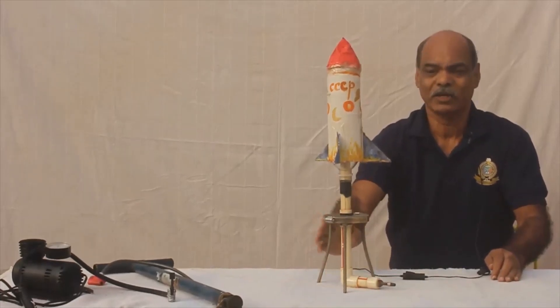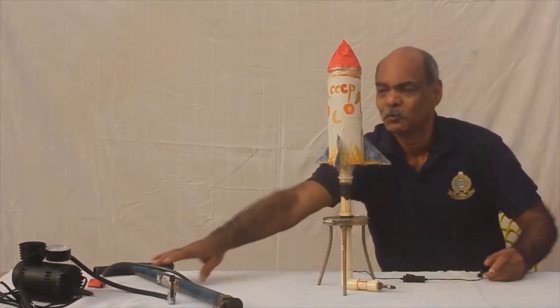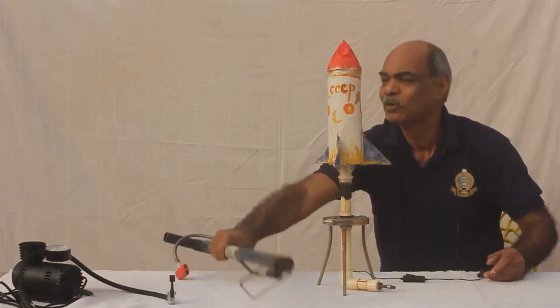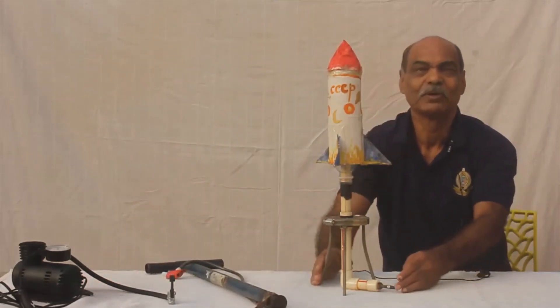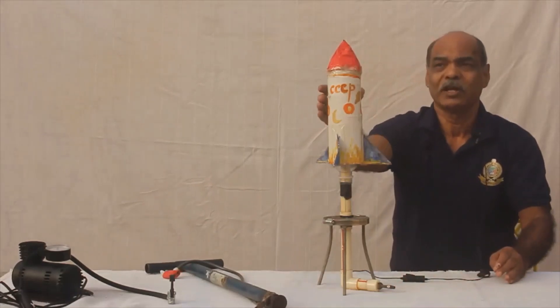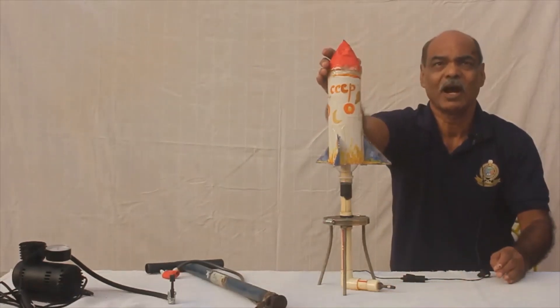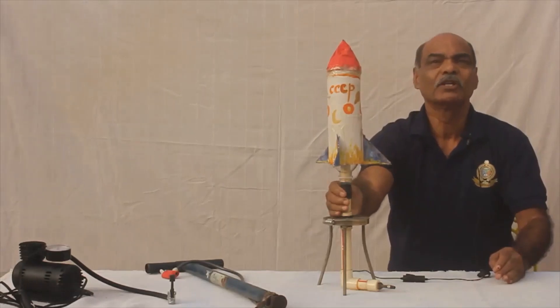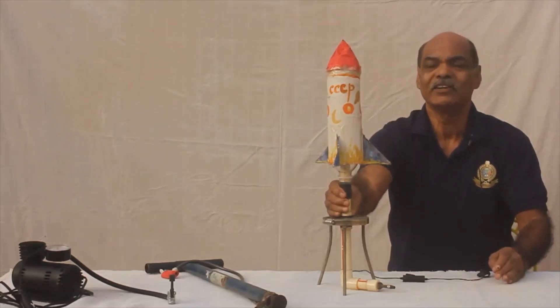To fire the rocket, we connect the end to an ordinary bicycle pump or an electric pump. The air pressure builds up. After a time, the friction hold is no longer able to hold it and it releases.